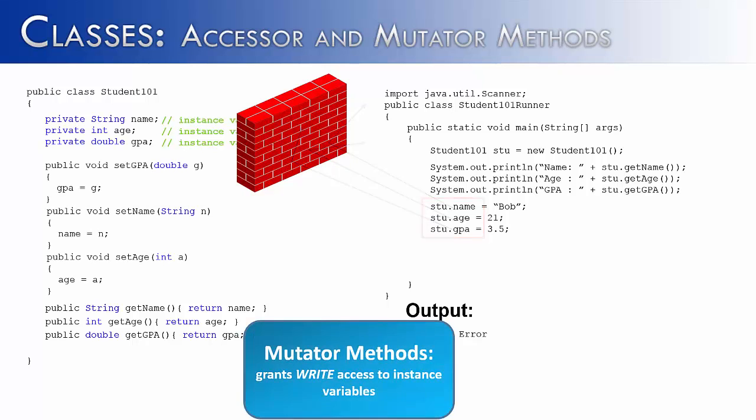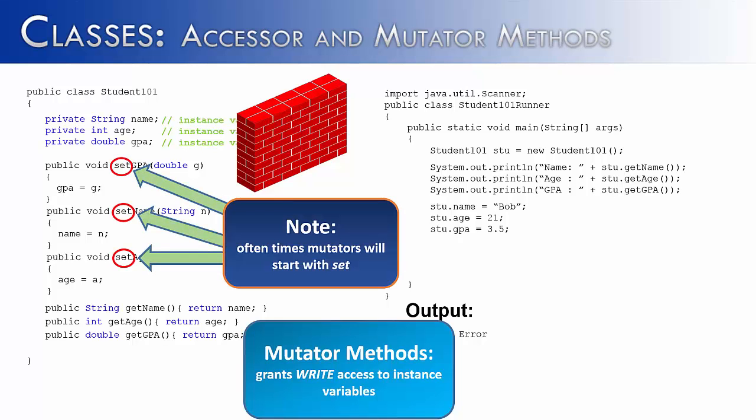We're going to do that using mutator methods. Mutator methods grant write access to instance variables. You can see all three of them, setGPA, setName, and setAge, are all void methods. They all have parameters: double G, string N, int A. The reason for the parameters is if you're going to set something or change your instance variables, you have to have what value you're changing it to. Just like accessor methods start with get, mutator methods often start with the word set.